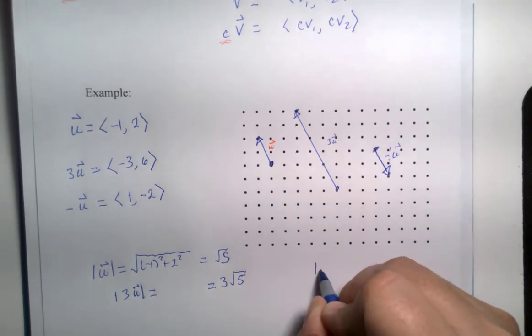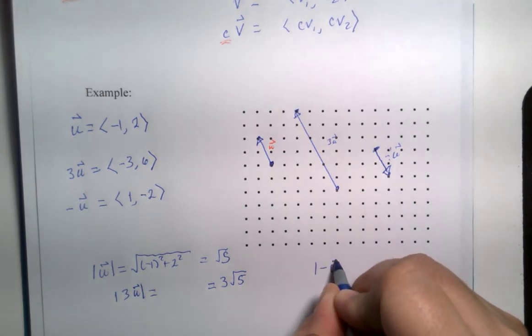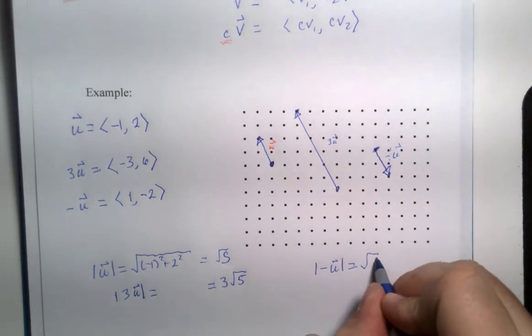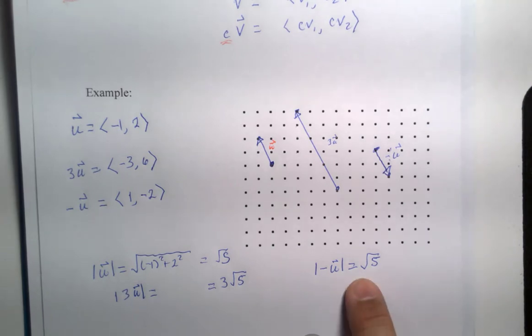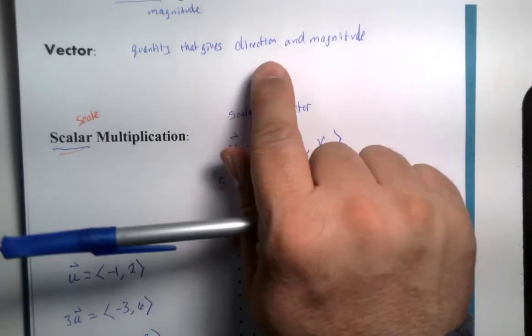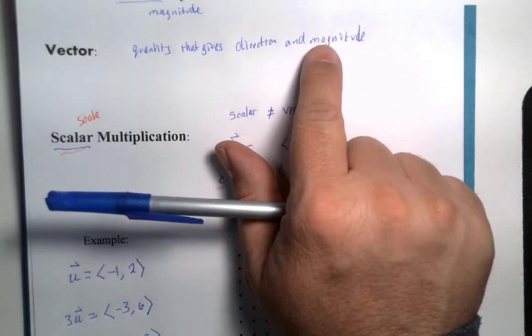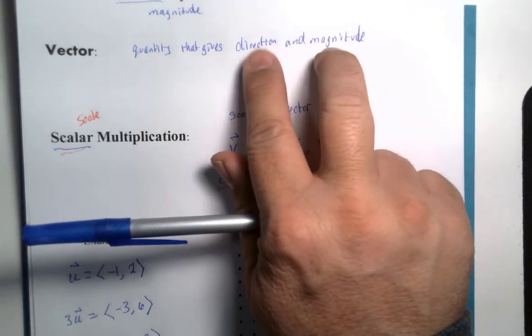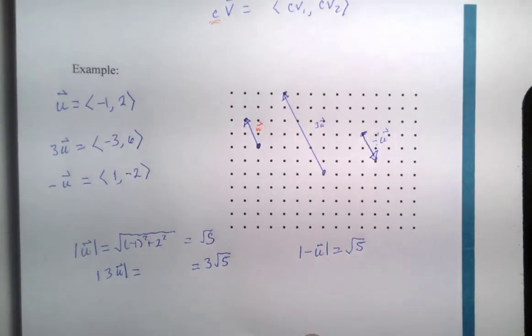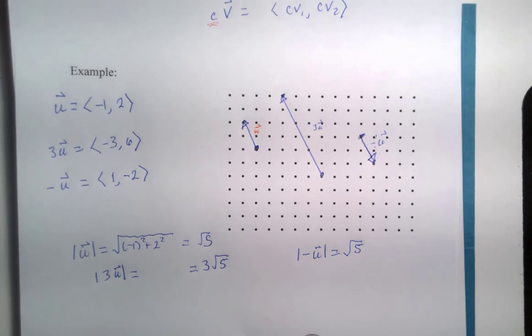But if we were to calculate the magnitude of negative u, it's still going to have that magnitude of square root of five. Magnitudes are positive. The length is positive. It doesn't give the direction. Remember, vectors need to provide two things. Direction is one of them. Magnitude is another. Having only one of these is not enough to see a full vector. That's not too bad. Stay tuned for some more vector basics.